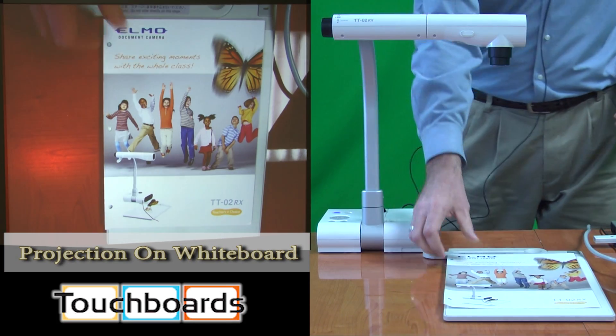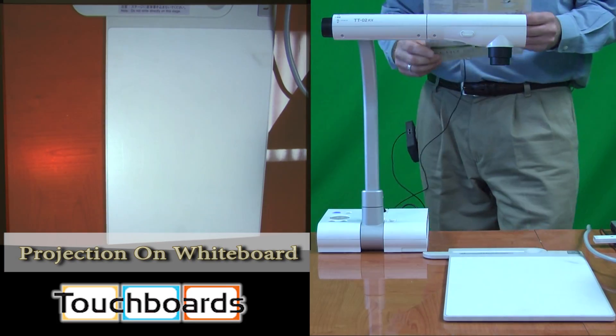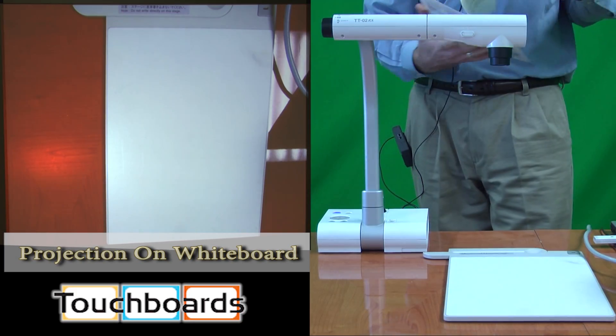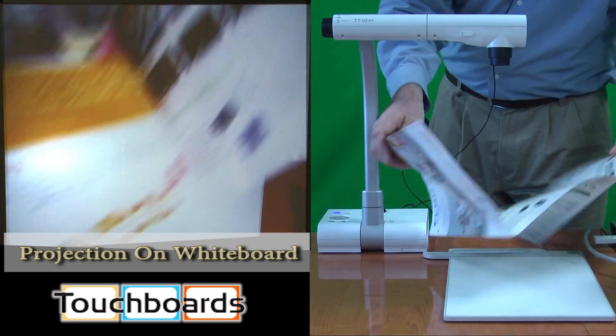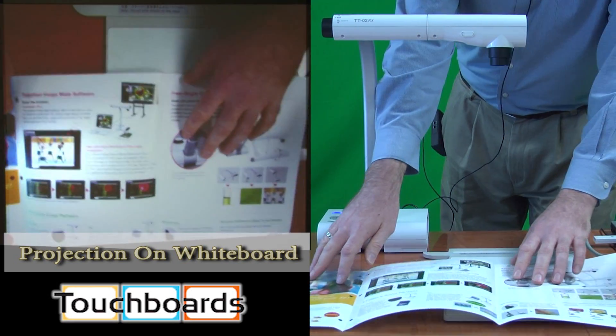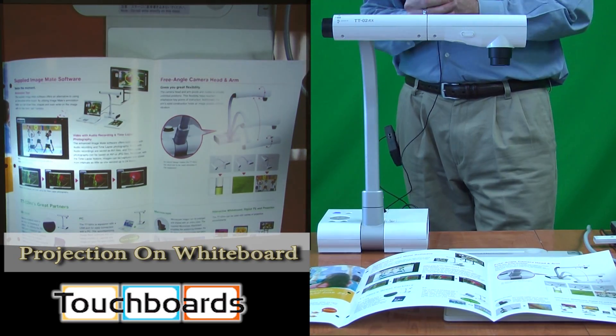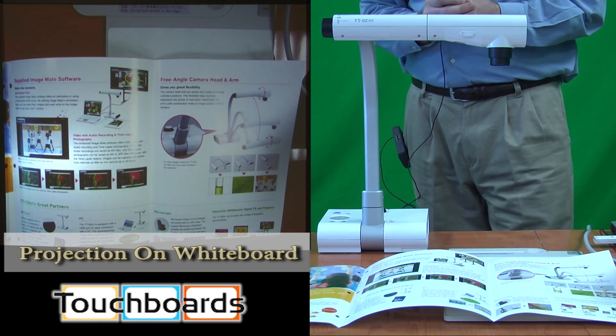The idea behind the camera is that it is a digital overhead projector. We can take any three-dimensional or hard copy materials, such as this TT-02 brochure, lay it on the stage or on the desktop, and show it live to the class. We have a board set up and a projector so that you can see the output image.